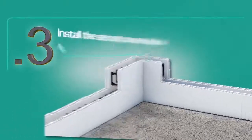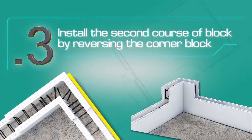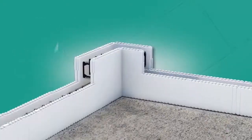Install the second course of block by reversing the corner blocks so that the second course of block is offset from the first in a running bond pattern.